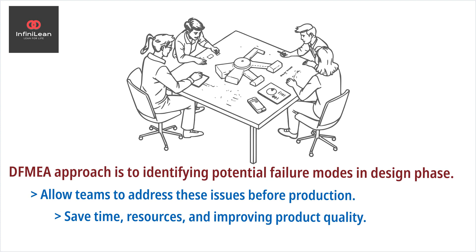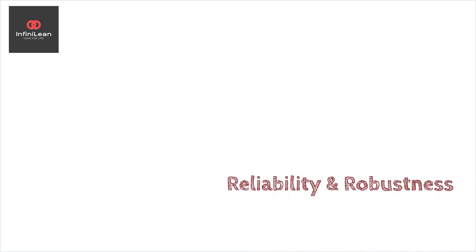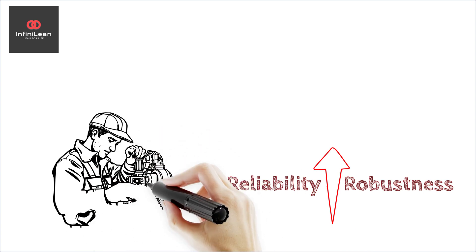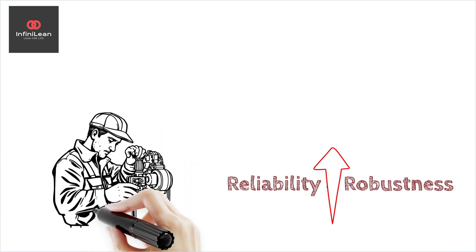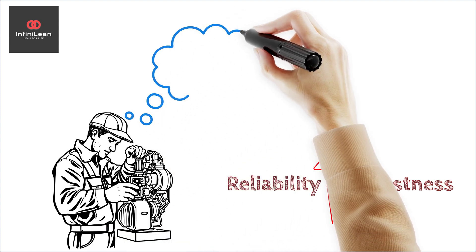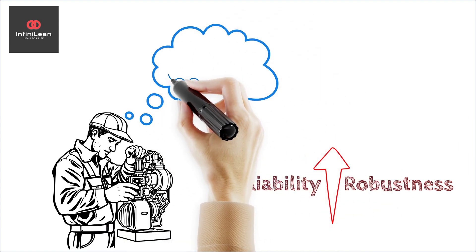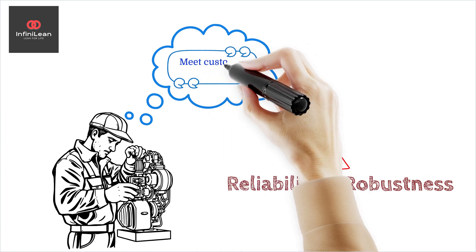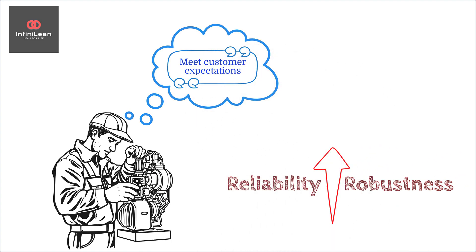Six Sigma often focuses on reducing process variability and defects. With DFMEA, the focus shifts slightly towards enhancing a product's reliability and robustness. DFMEA is critical in designing processes that meet customer expectations and industry regulations. By conducting a thorough DFMEA, teams can prioritize efforts based on risk assessment outcomes.